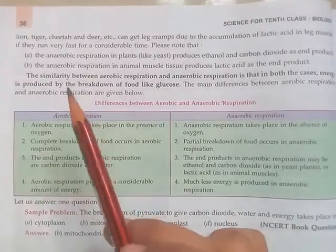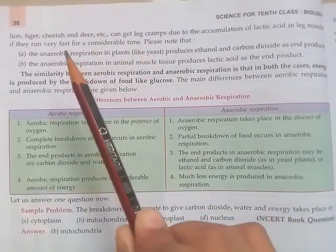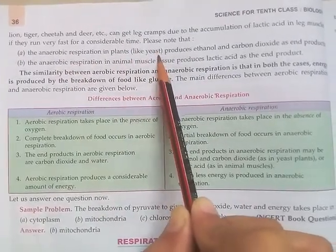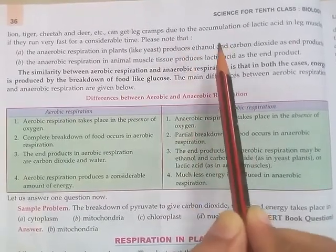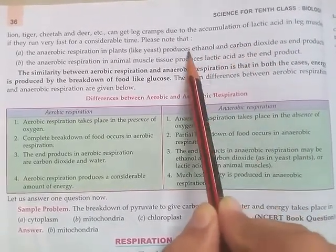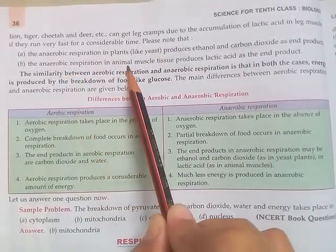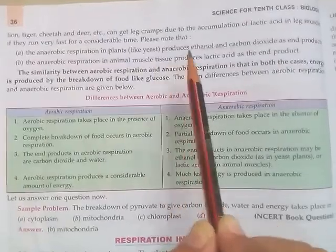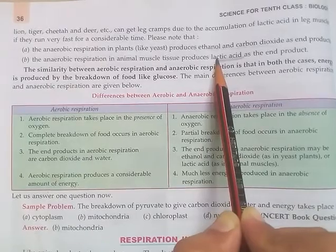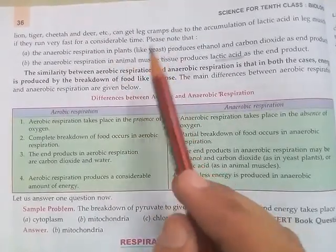What are the by-products of anaerobic respiration? If the anaerobic process occurs in plants or yeast, the end products are ethanol and carbon dioxide. But if the anaerobic process occurs in animals — specifically in muscles — then lactic acid is the end product. So in different cases, the by-products of anaerobic respiration are different.